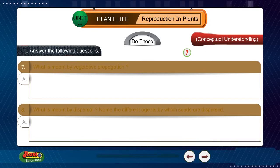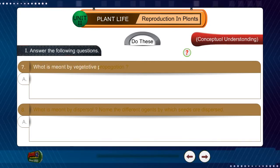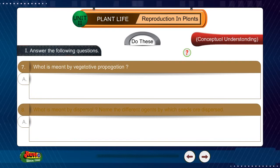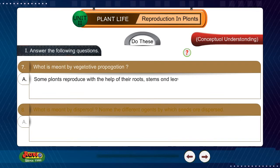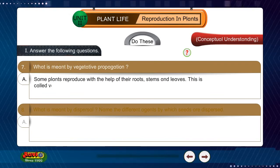Question 7: What is meant by vegetative propagation? Answer: Some plants reproduce with the help of their roots, stems, and leaves. This is called vegetative propagation.